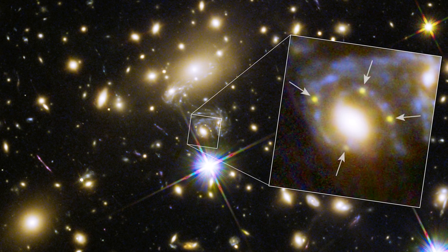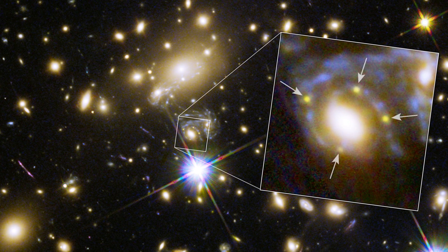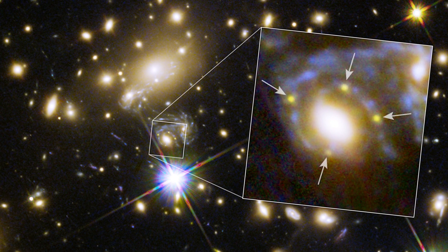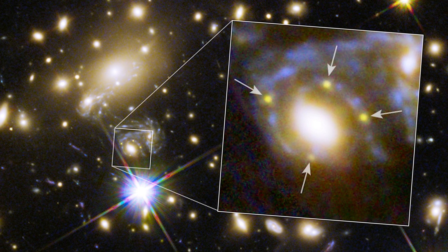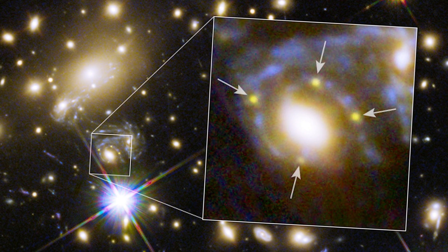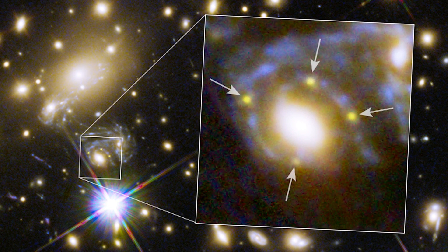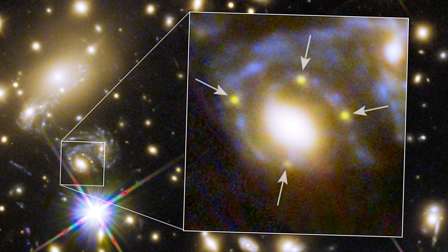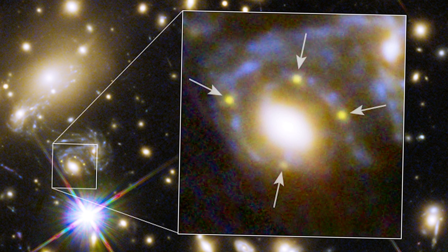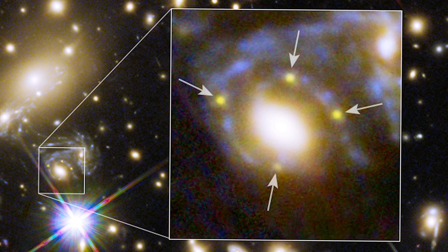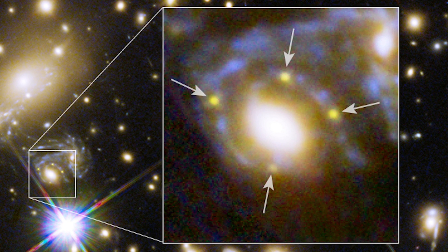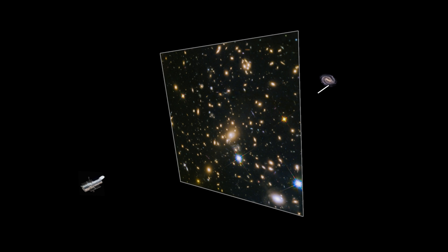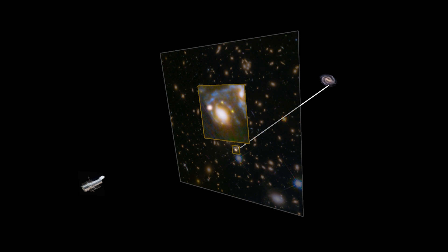For the first time, astronomers spotted four images of a distant exploding star — a supernova. The images were arranged in a cross-shaped pattern by the powerful gravity of a foreground galaxy embedded in a massive cluster of galaxies. As the supernova was perfectly aligned with one of the galaxies in the cluster, its light has been split into four images.